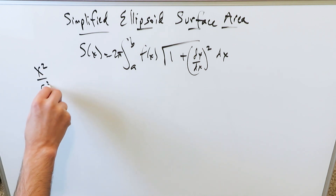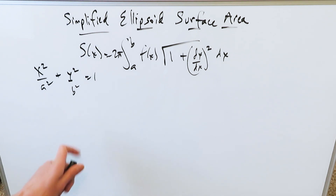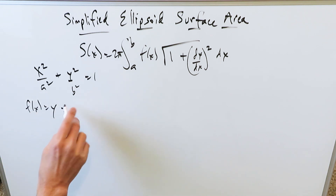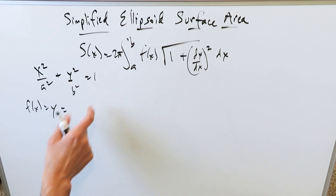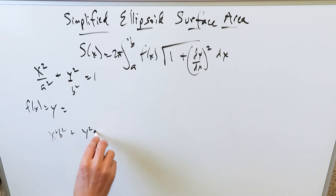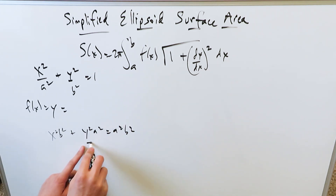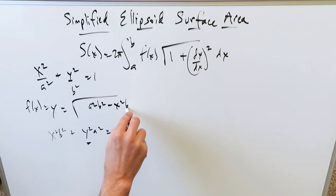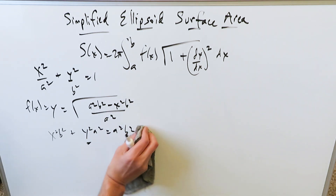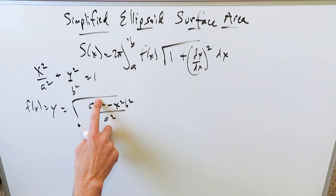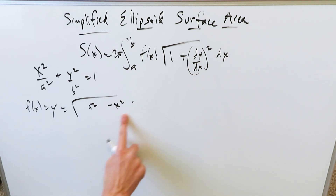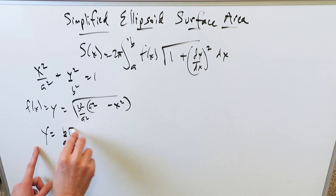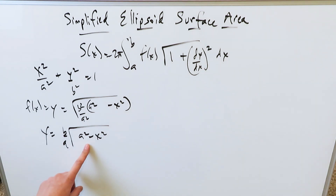Our basic equation for an ellipse is x²/a² + y²/b² = 1. It's an ellipse horizontally oriented with the origin as center, and you can determine the function — your function is essentially y, and you solve for it. Cross-multiplying gives x²b² + y²a² = a²b². Solving for y, you get y = √(a²b² − x²b²)/a², which simplifies to y = (b/a)√(a² − x²). We need this because it appears right here in the formula.